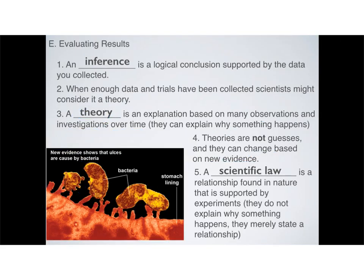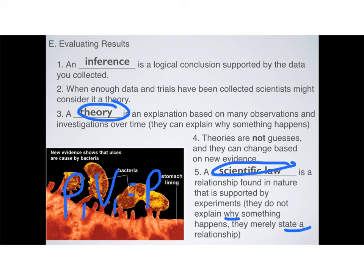Last but not least, we have to talk about scientific laws. And so the difference between a scientific law and a theory is pretty straightforward. Scientific law is a relationship found in nature that is supported by experiments. It doesn't explain why something happens. It just states a relationship. Scientific laws are almost always going to be mathematical. For example, we have P1 times V1 equals P2 times V2. That's called Boyle's Law. And it's called Boyle's Law because it relates pressure to volume. If pressure goes up, volume goes down. If pressure goes down, volume goes up. And so scientific laws are almost always going to be mathematical in nature. And again, they don't explain why something happens. They merely state a relationship that is true in nature.